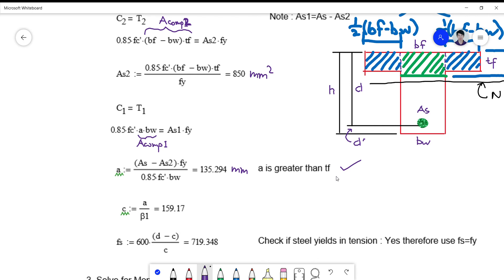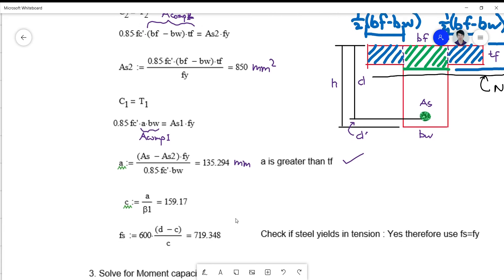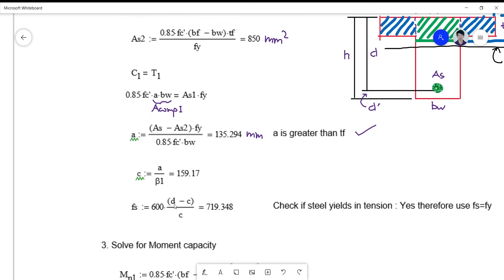We simply subtract AS which is 2000, so 2000 minus 850 times fy divided by 0.85 f'c prime BW, so you get a value of 139.294. This is in millimeter, so A is greater than TF is a correct assumption now.